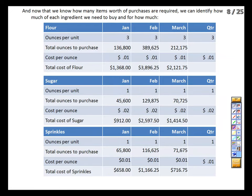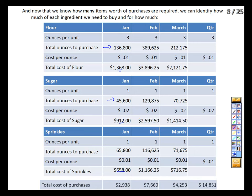Having that information, we can now calculate the dollar value of what we're buying. In January we need to purchase 45,600 donut holes' worth of flour and sugar. We need 3 ounces of flour and 1 ounce of sugar per hole, so that's 136,800 ounces of flour and 45,600 ounces of sugar. Flour at a penny an ounce is $1,368; sugar at 2 cents is $912. For sprinkles we had a higher purchase quantity but only a penny an ounce, yielding $658. Total raw materials purchases in January: $2,938. We repeat for February and March.